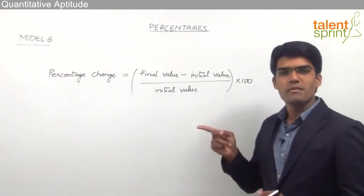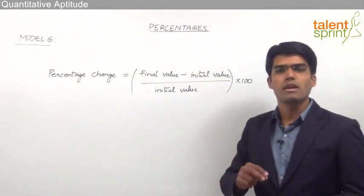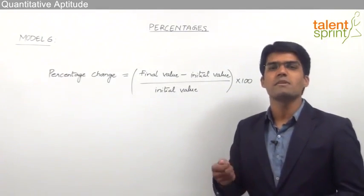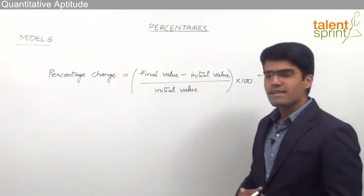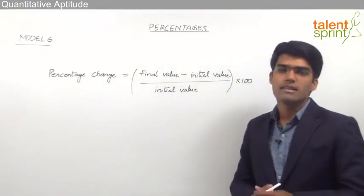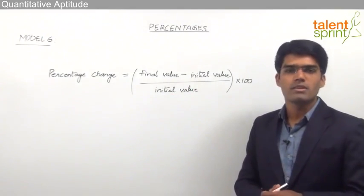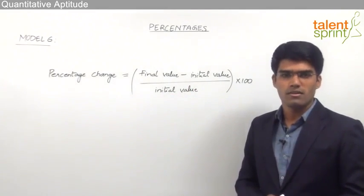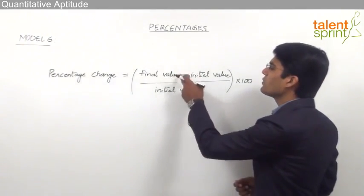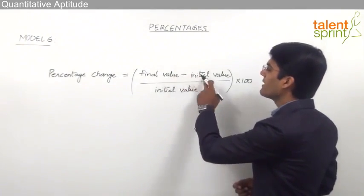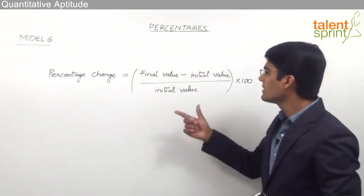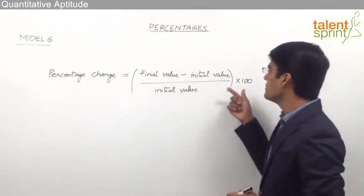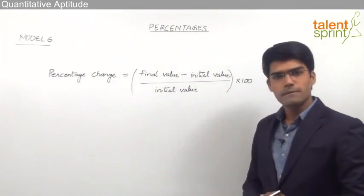So this is how, whenever we need to find out a percentage change between two values, we always take it as final minus initial by initial value into 100 — that is, the difference of the two values (final minus initial) divided by the initial value, into 100.